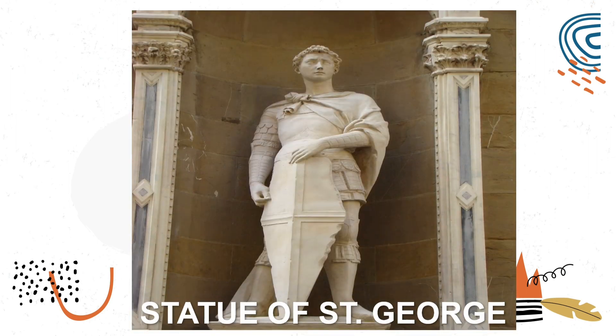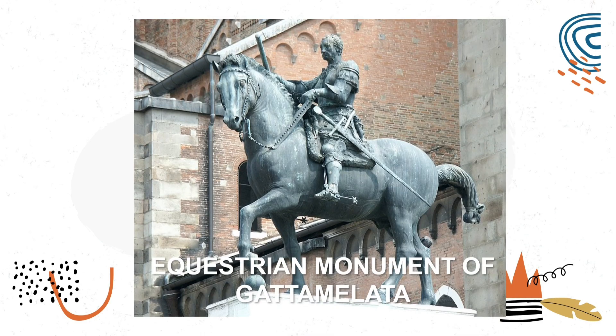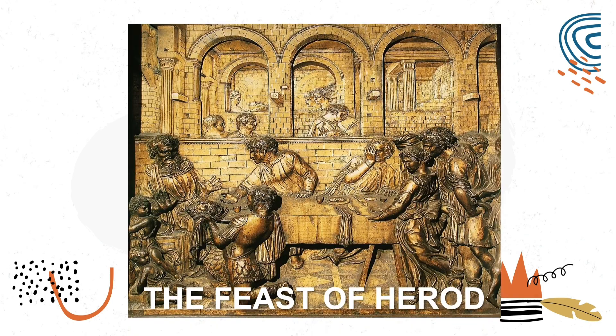The Statue of George was created for the group of Florentine armorers and sword makers, carved from marble. The Equestrian Monument of Gattamelata portrays Gattamelata as a composed, alert, and watchful leader who fought for Venice. The last one is the Feast of Herod, Donatello's first bronze relief sculpture, which depicts the life of St. John the Baptist — an executioner presenting the severed head while Herod reacts in shock.